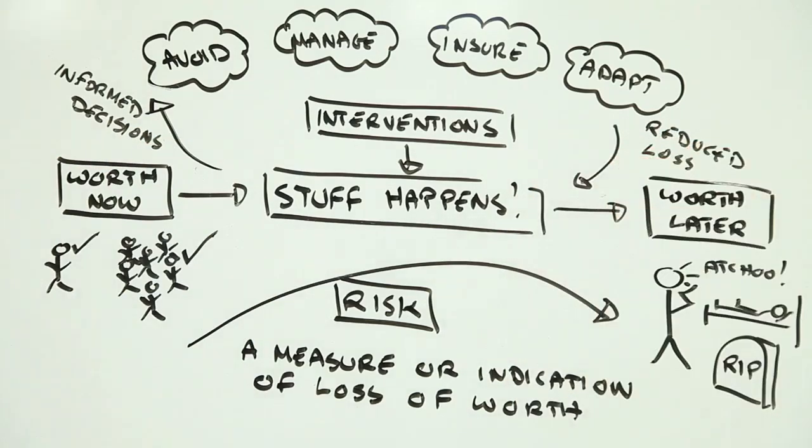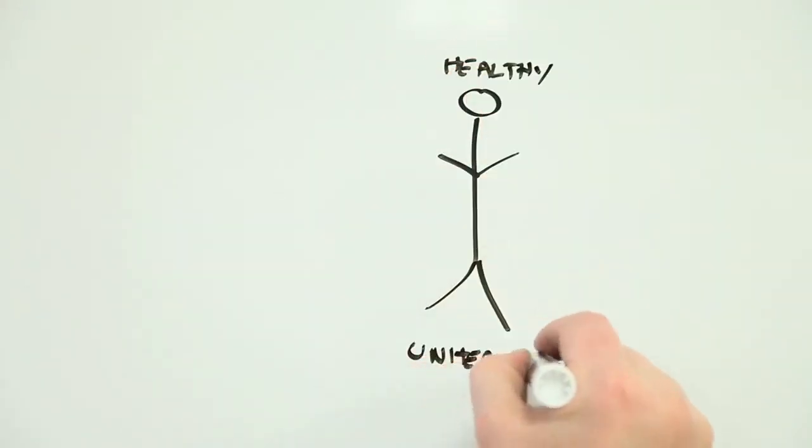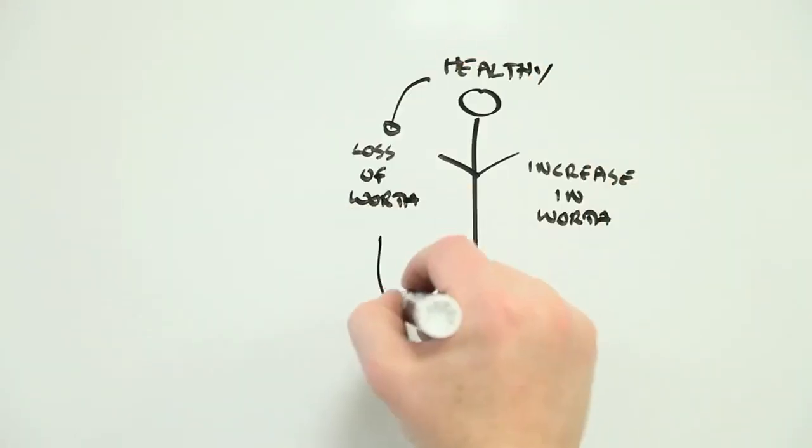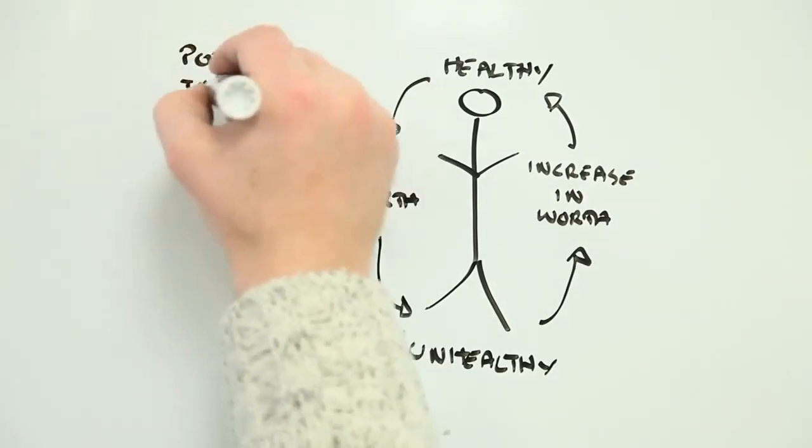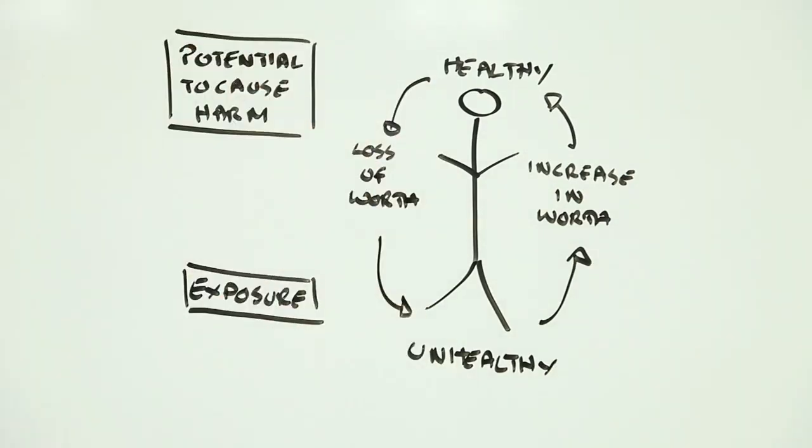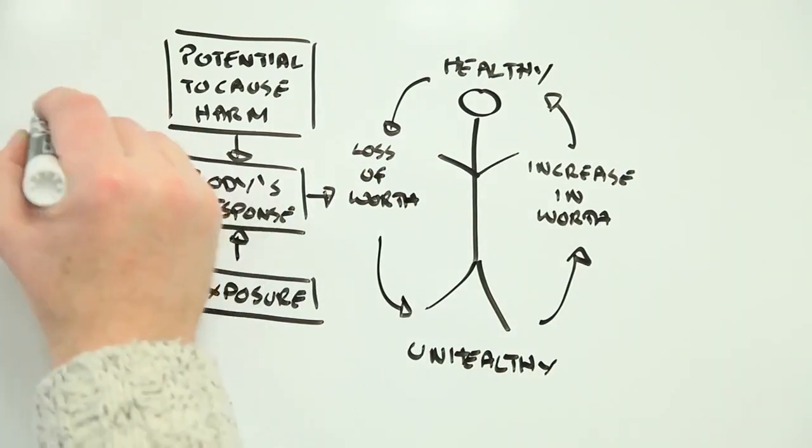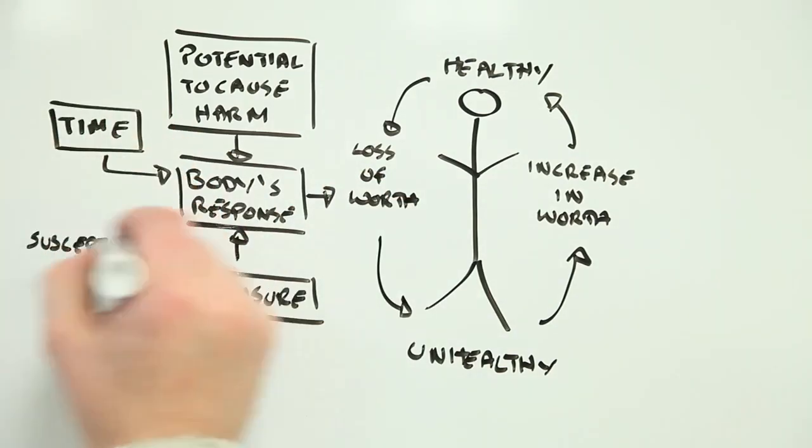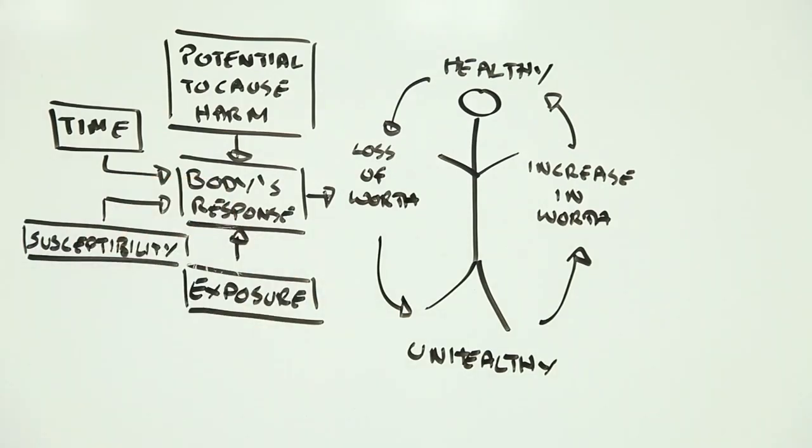However, calculating health risk is not easy. To come up with a number, we need to understand the innate potential of things to cause harm, as well as how much of them causes what specific harm. We also need to understand how exposure to different agents affects people across their lives, and how they react differently to the things they come into contact with.